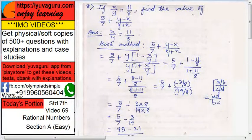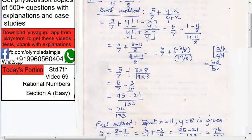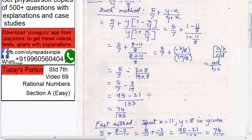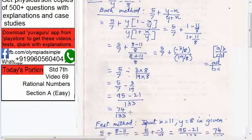5 upon 7 minus 3 upon 19. So, LCM of 7 and 19 now. There is no common number between 7 and 19. So, it will be direct multiplication. 19, 7 is 133. Convert this. 7 into 19. So, 5 into 19 is 95. 19 into 7. So, 3 into 7 is 21. 95 minus 21 is 74 upon 133. This cannot be divided further. So, this as it is.